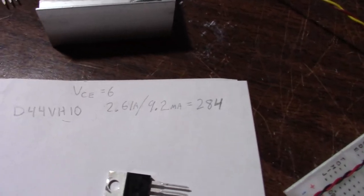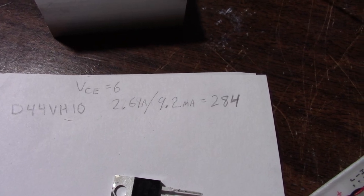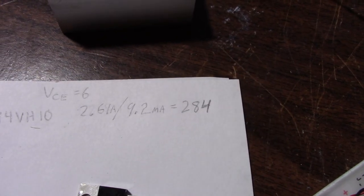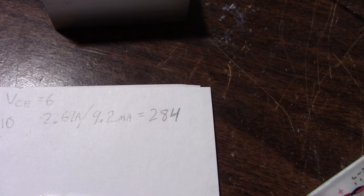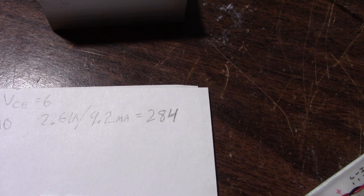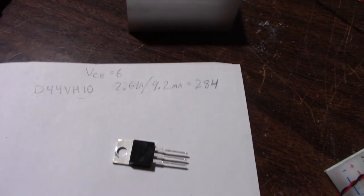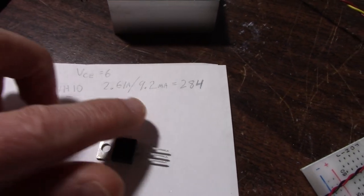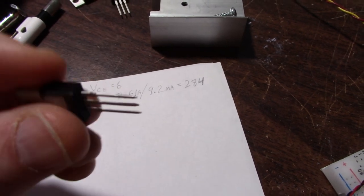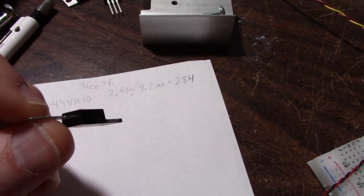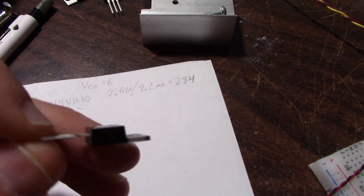So here's the results. The collector current was 2.61 amps. And the base current was 9.2 milliamps. For a current gain of 284. That's pretty darn impressive. Pretty high gain. And that could be quite useful in audio circuits. Like I say, driving an output stage directly off of an op amp.